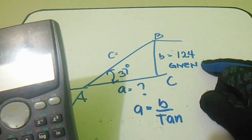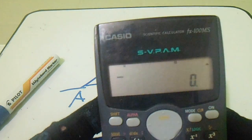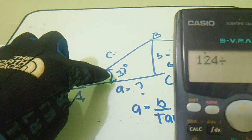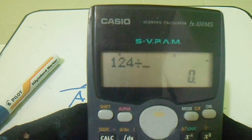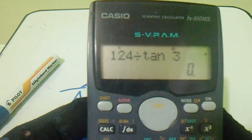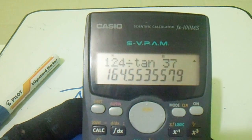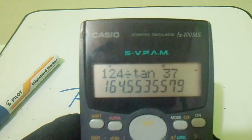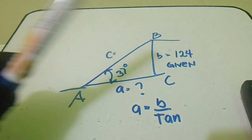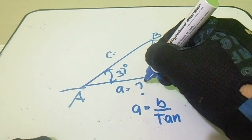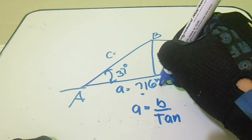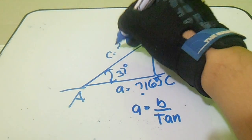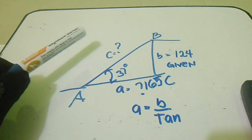Let's compute: 124 divided by tan(37°) using the calculator FX 100 MX. Our answer is approximately 164, rounding off to 165. So for side A, our answer is 165.